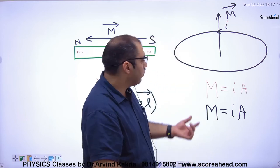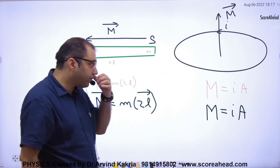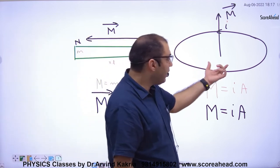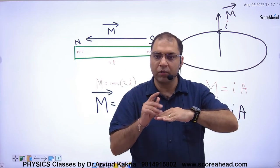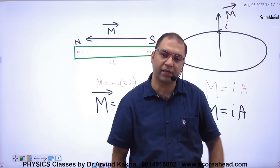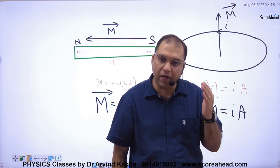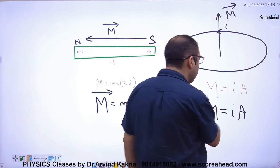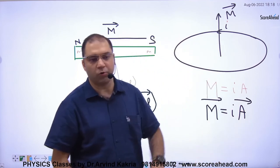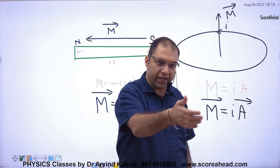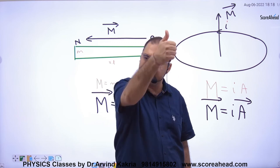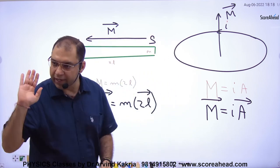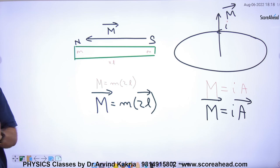If asked for the area vector of the ring: the area vector is perpendicular to the plane of the loop — either upward or downward. The direction of area vector A is the same as the direction of M, determined by the right-hand rule with the current. Both concepts — bar magnet and current-carrying loop — have different numericals and different formulas.